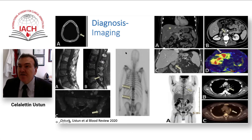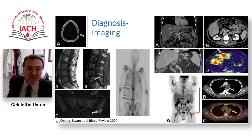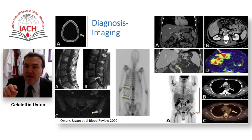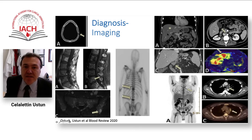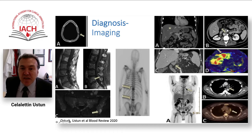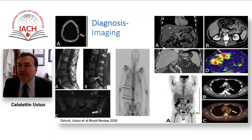Mastocytosis causes bone lesions that can be lytic, like myeloma lesions in the calvarium, or sclerotic lesions in the pelvis or lumbar-sacral vertebra. These are sometimes confused with solid tumor metastasis — biopsied as possible prostate cancer — and come back as mast cells. Hepatomegaly, splenomegaly, and lymphadenopathy are common findings. These can be positive on PET or MRI, and liver fibrosis can be detected by MR or ultrasound elastography, along with mediastinal lymph nodes.